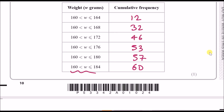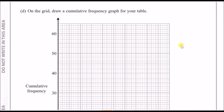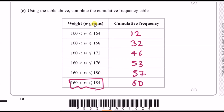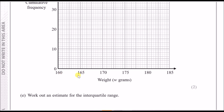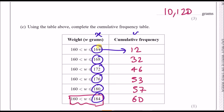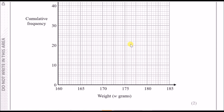For part d, draw a cumulative frequency graph. The x-axis shows weight and the y-axis shows cumulative frequency. Always plot the end-point of each class against the cumulative frequency. So 164 pairs with 12, and 168 pairs with 32. Each small block on the x-axis represents 0.5, so carefully count along: 164 is here, going up to 12.